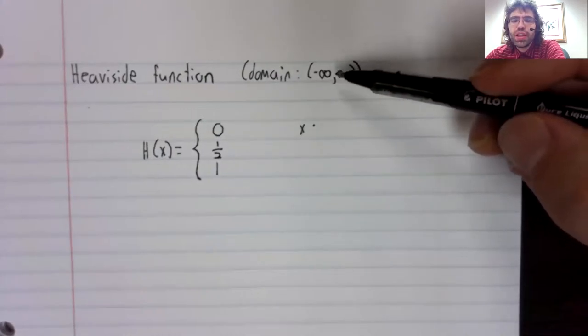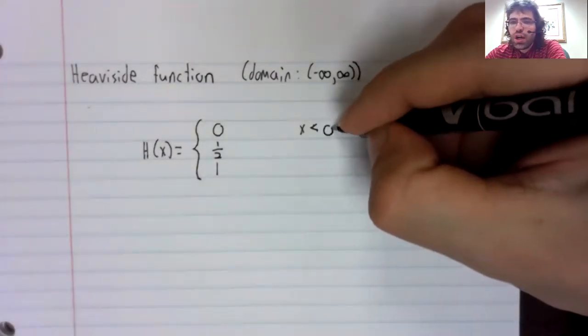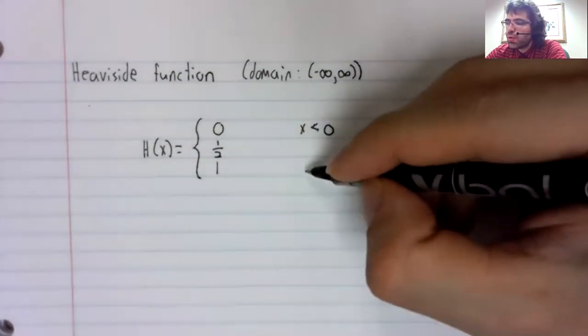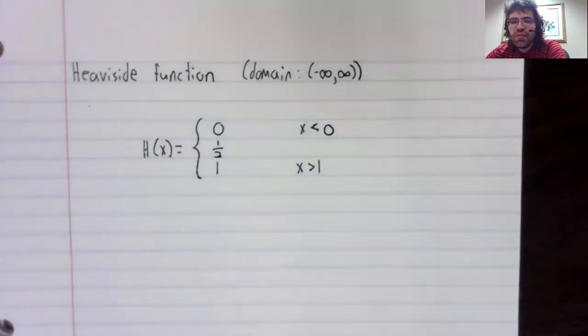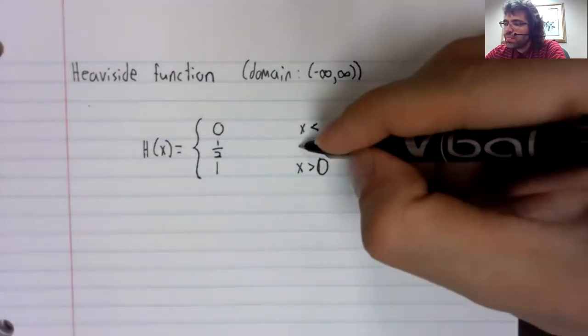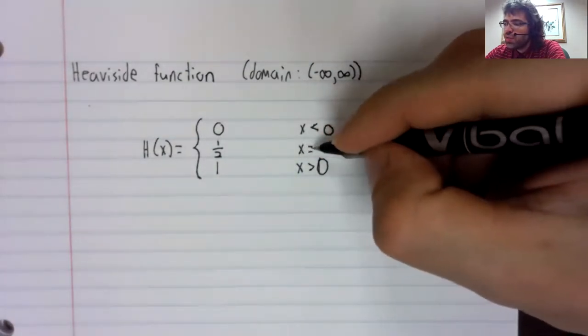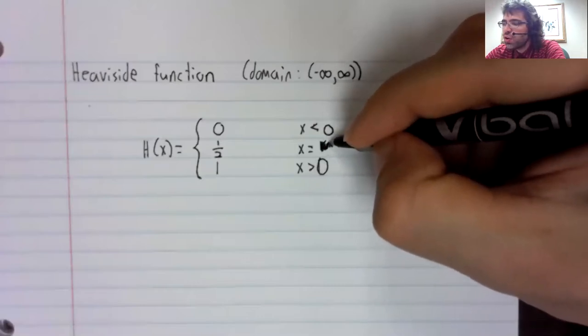The domain of the Heaviside function is all of the real numbers. And the way this domain is being broken apart, we've got the negative numbers, the positive numbers.